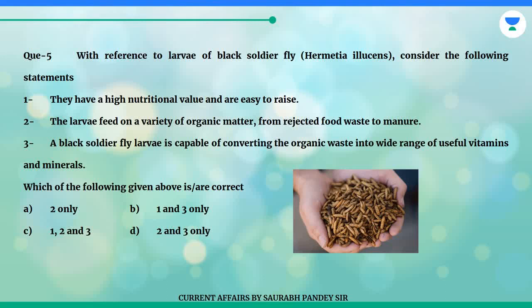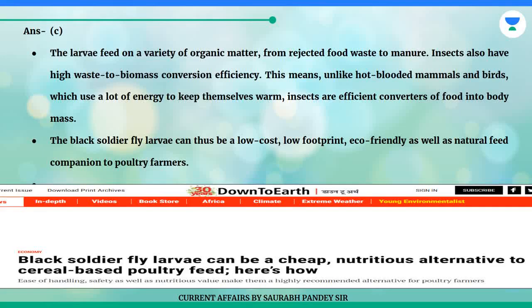A. Two only. B. One and three only. C. One, two and three. D. Two and three only. The answer is C. The larvae feed on a variety of organic matter, from rejected food waste to manure. Insects also have high waste to biomass conversion efficiency.